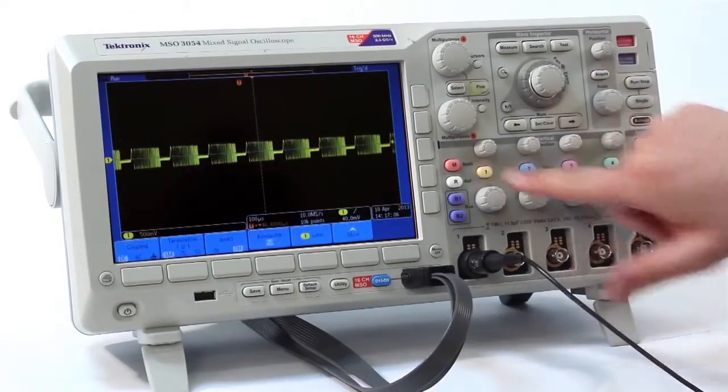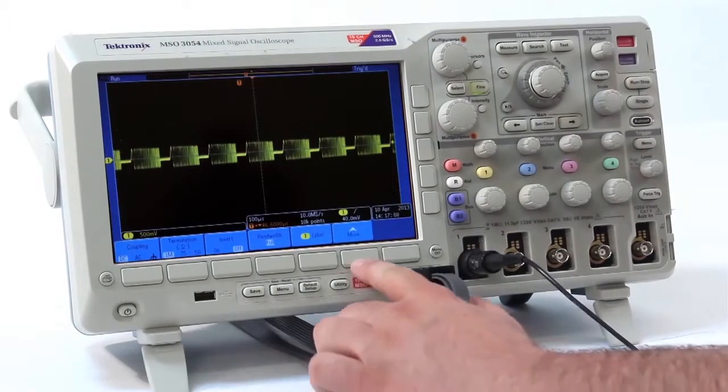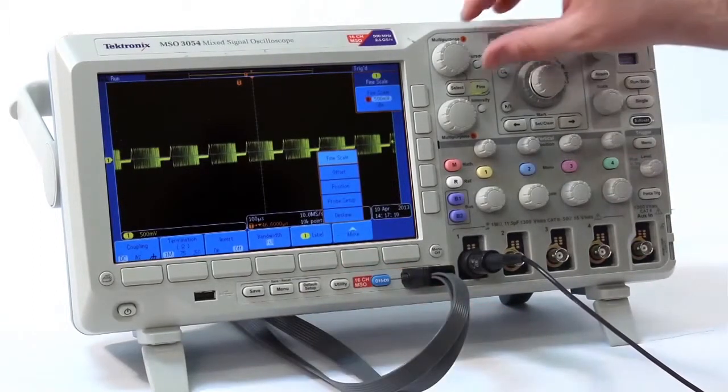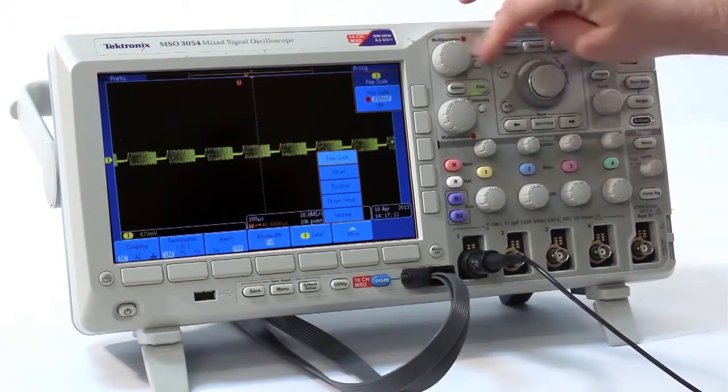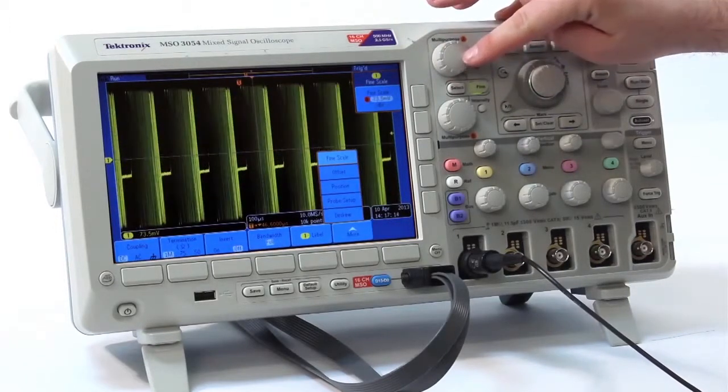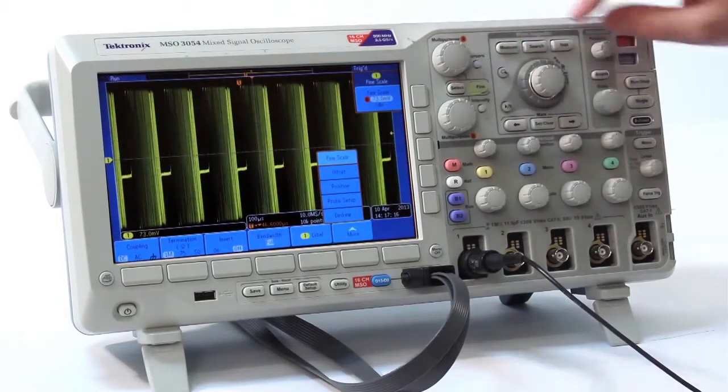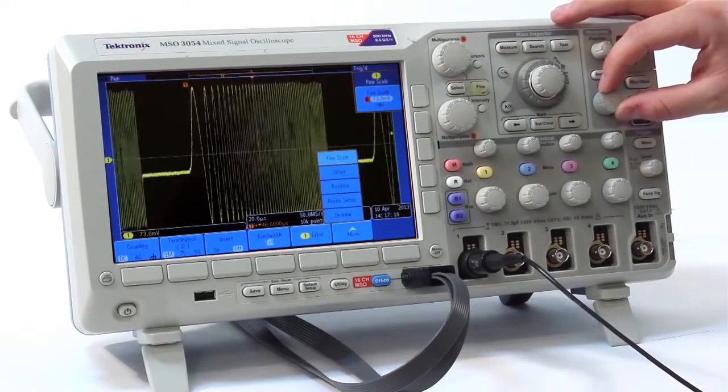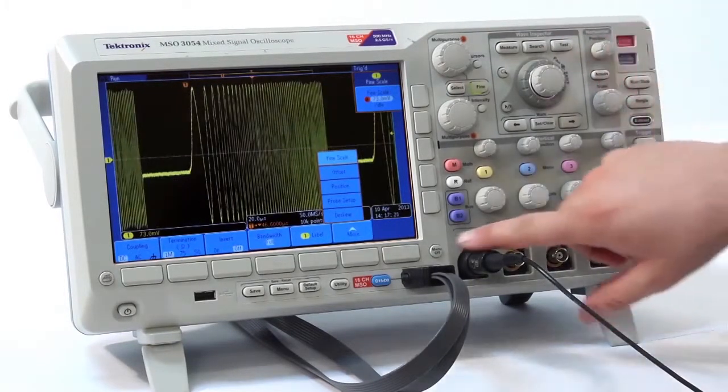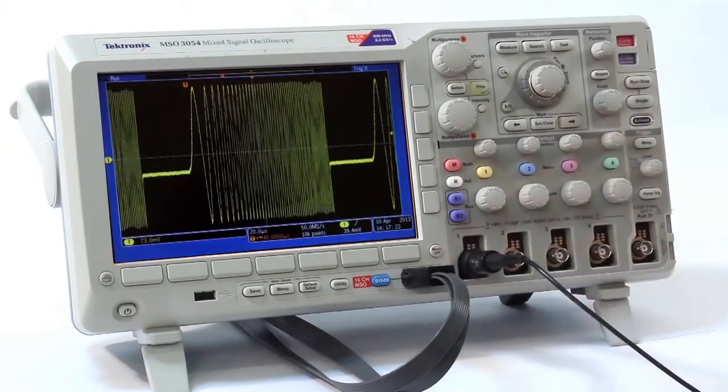Tektronix does not offer a quick way to switch into Find Vertical Mode. You must navigate a few menus and then use a tandem of knobs to center the waveform on the display. Additionally, Tektronix does not have a Find Mode on their time base. It also lacks pushable knobs and only offers limited built-in help functionality.